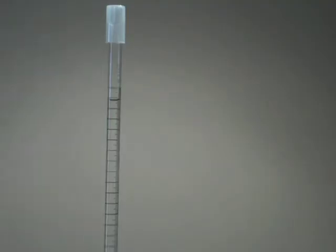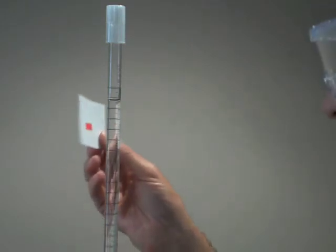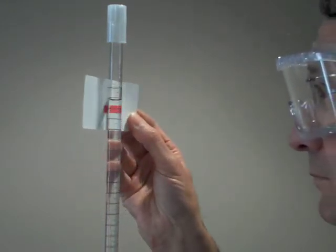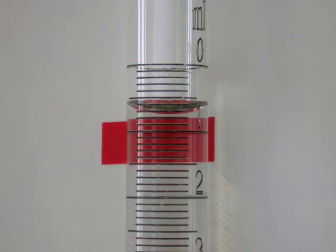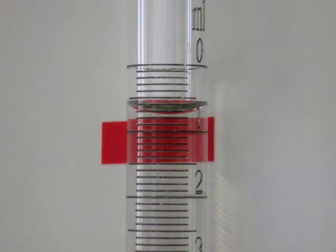Estimate where the bottom of the meniscus is on the graduated scale. You may find it helpful to use a reading card. A reading card is merely a colored rectangle on a white background. By bringing the rectangle up just below the meniscus, colored light is reflected off the curved surface to give a distinct outline against the white background.